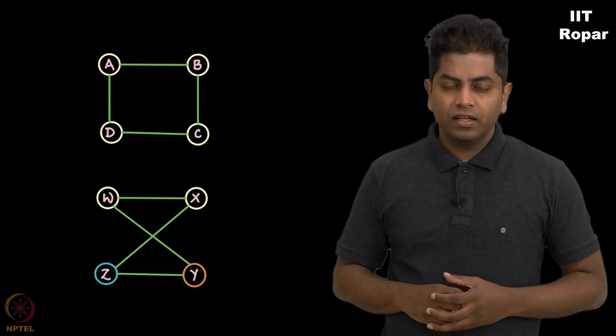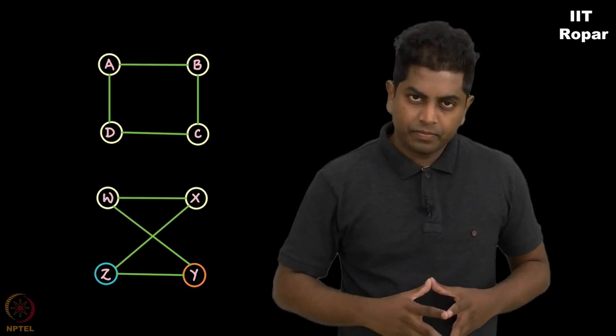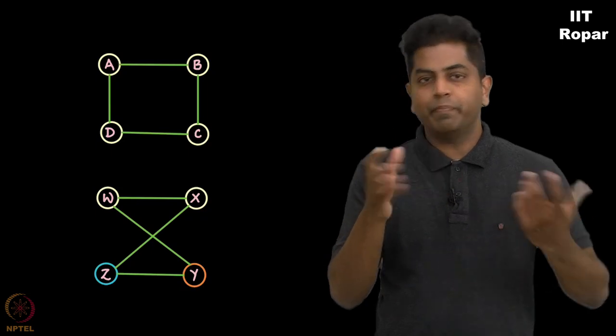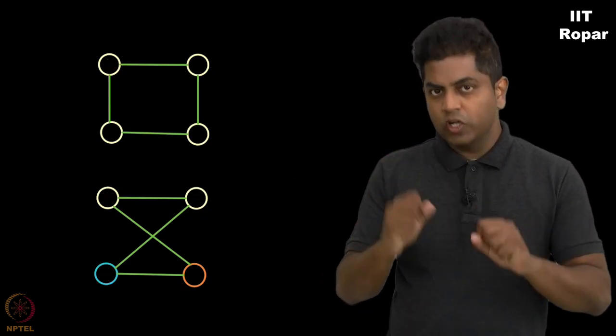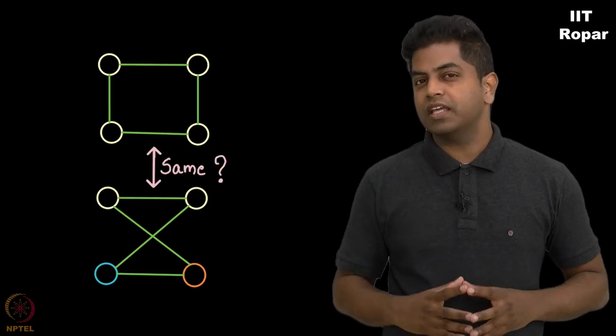As you can see, these four are different people, those four are different people. But if I were to exclude the people here and only look at these two graphs, are they structurally the same?